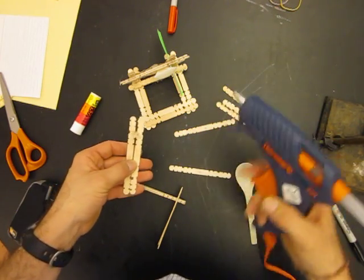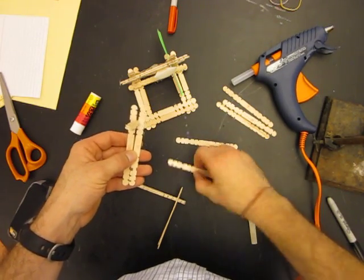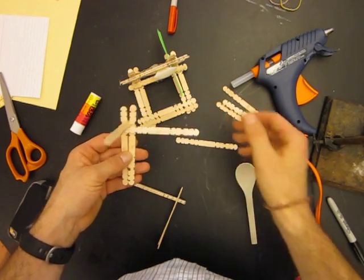So first some glue here, two little dots. Now one of the doubles goes across there, let it dry a little bit.